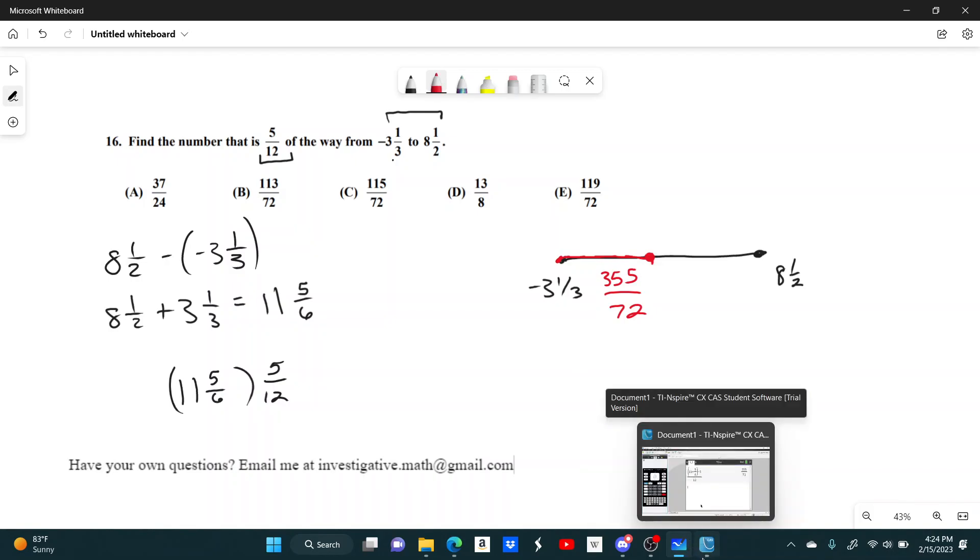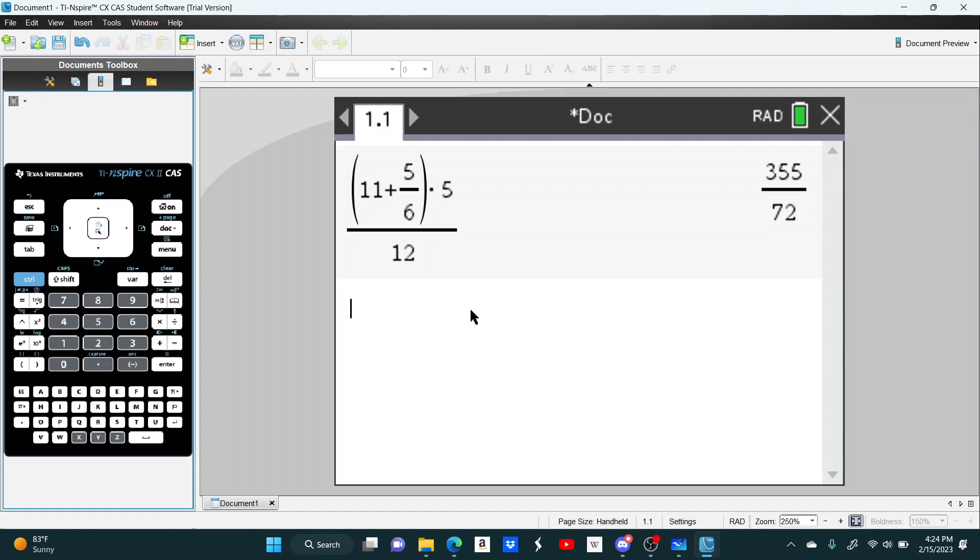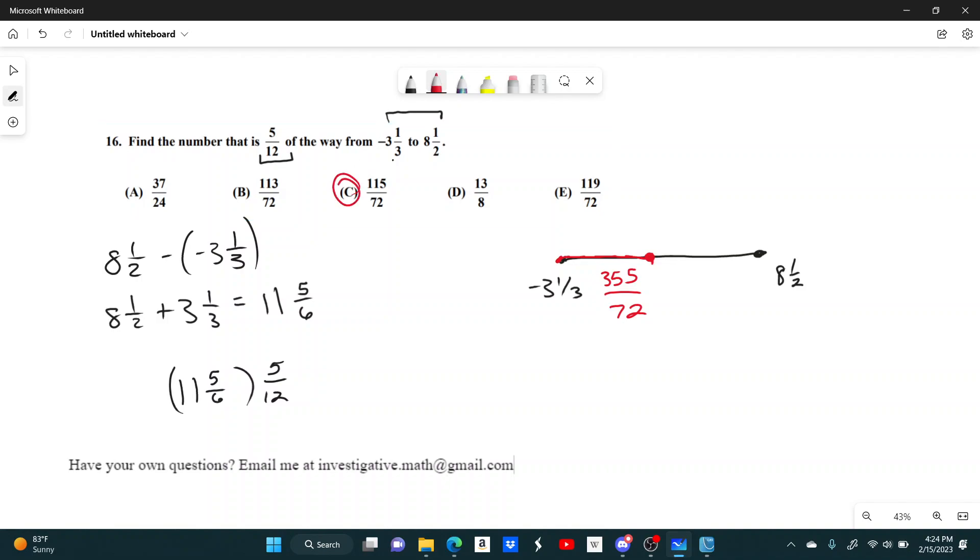So negative 3 and a third plus 355 over 72. We get 115 over 72, and that's answer choice C.